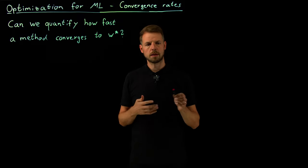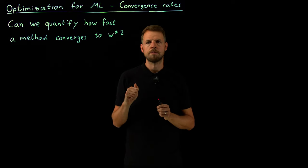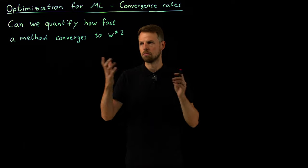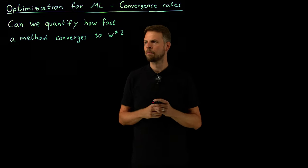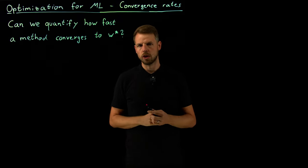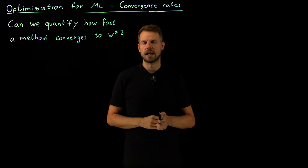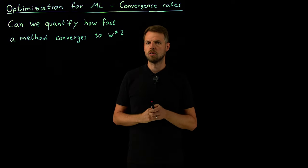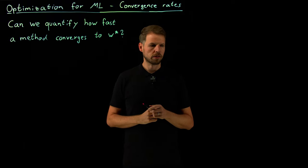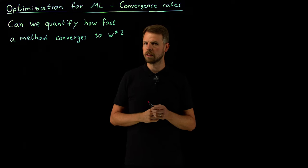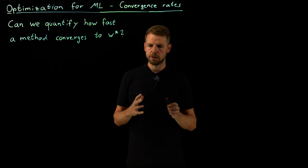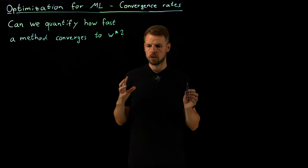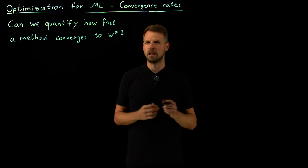We have seen in the past couple of videos that there are several ingredients — you have to pick a decent direction, pick a step length, decide whether you compute the entire gradient or use SGD with a stochastic subsample. Underlying all these questions is: how quickly do we converge to the optimum? How computationally efficient is the specific algorithm we have picked? Knowledge of convergence rates is really important for algorithm selection.